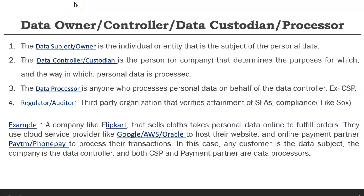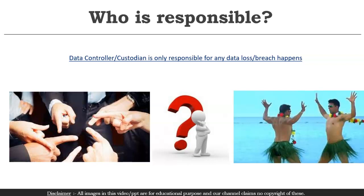Now, when we cover different country laws — if you are aware of GDPR, it has a mandatory data breach reporting requirement of 72 hours for European customers. Similarly, HIPAA covers health patient data privacy laws in the US, and various other countries have their own laws. The very important question asked again and again in the CCSP exam is: who is responsible legally in case a data breach or data loss happens when multiple parties are involved? The ultimate responsibility always lies with the data controller or custodian. Any legal penalty is imposed on the data controller only.